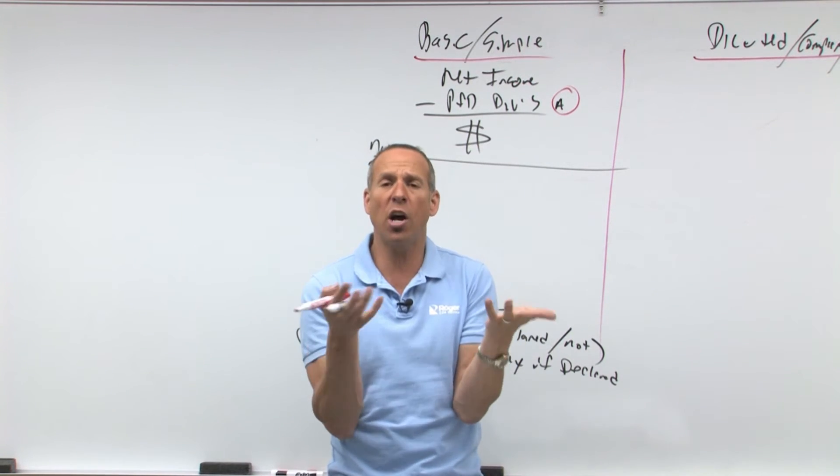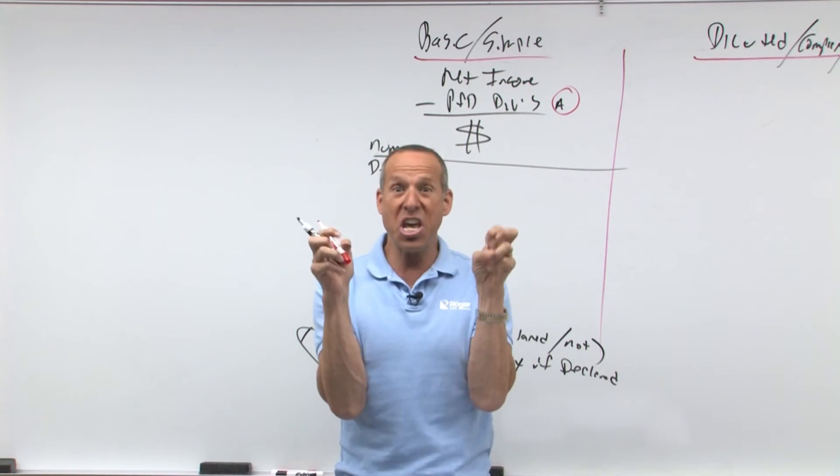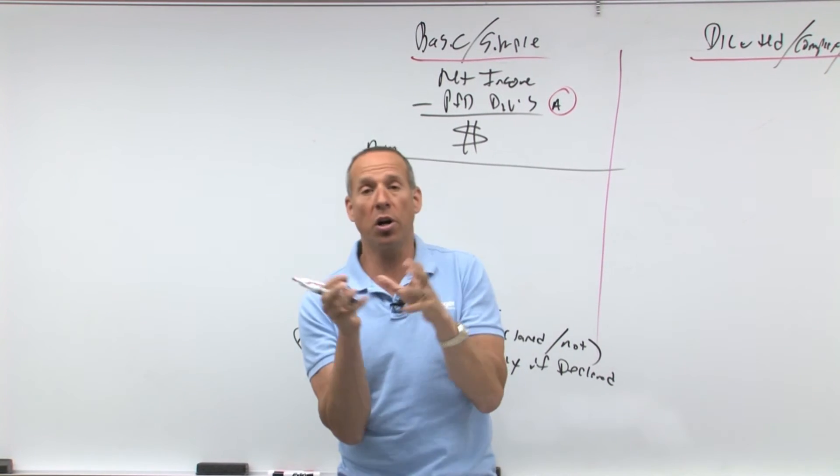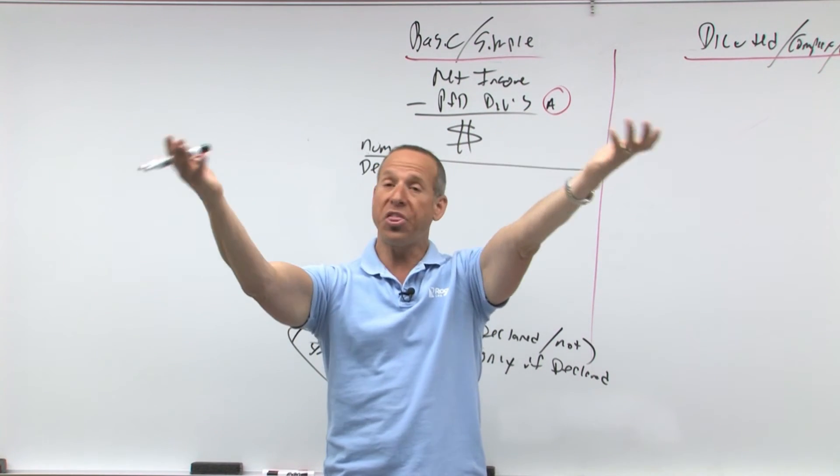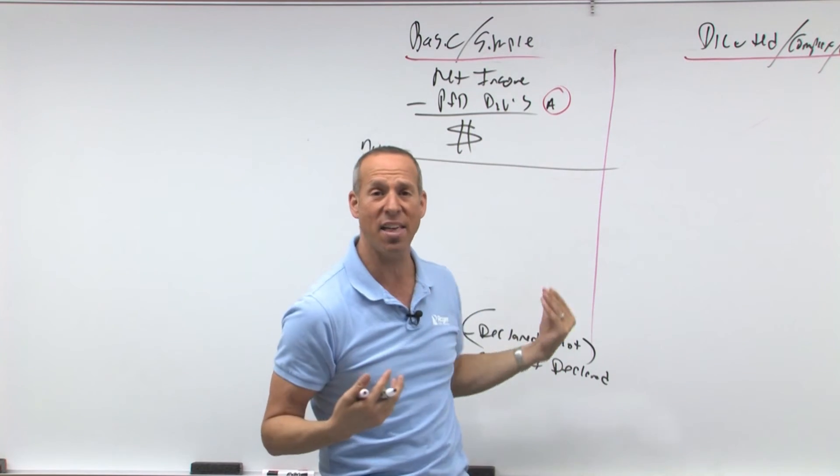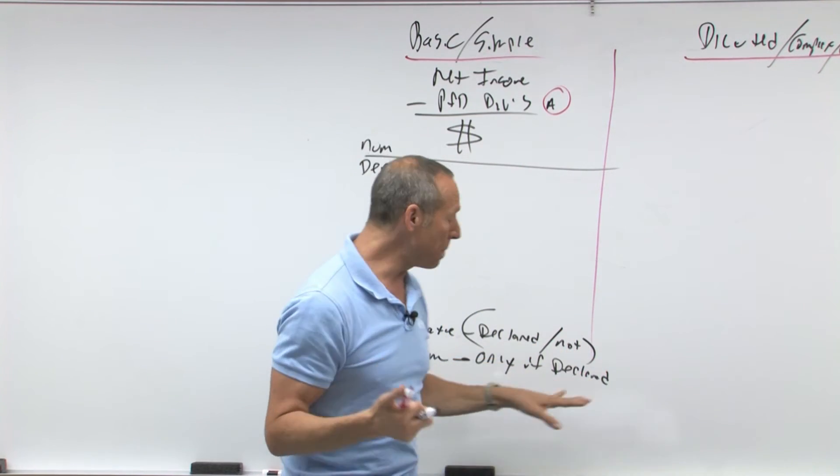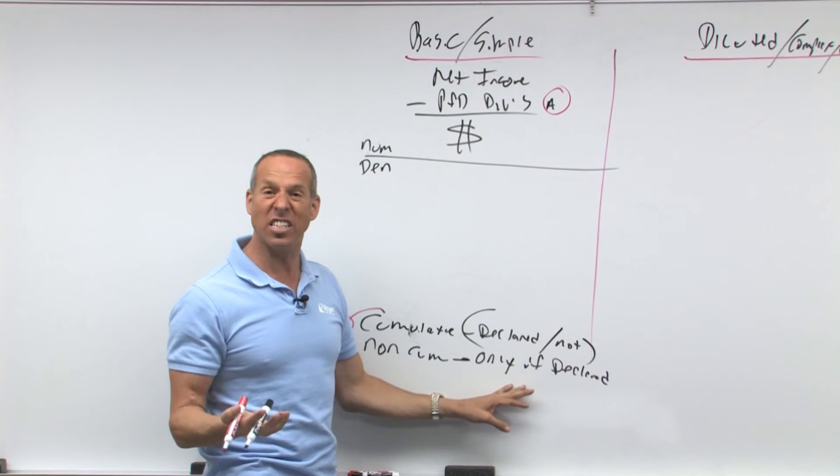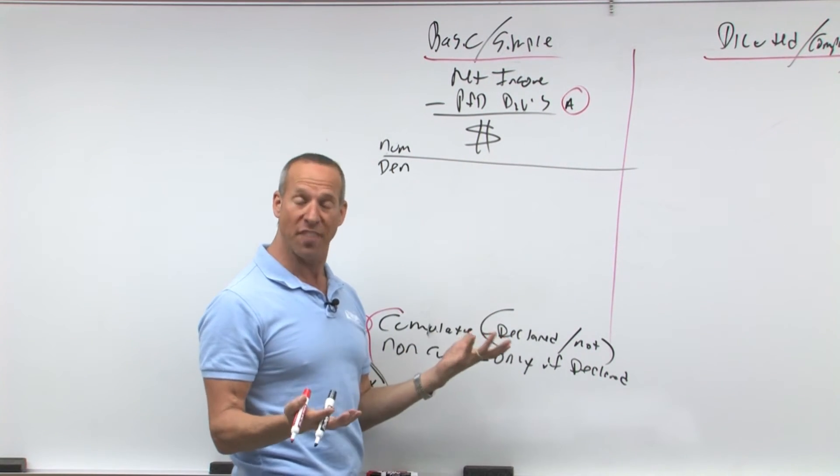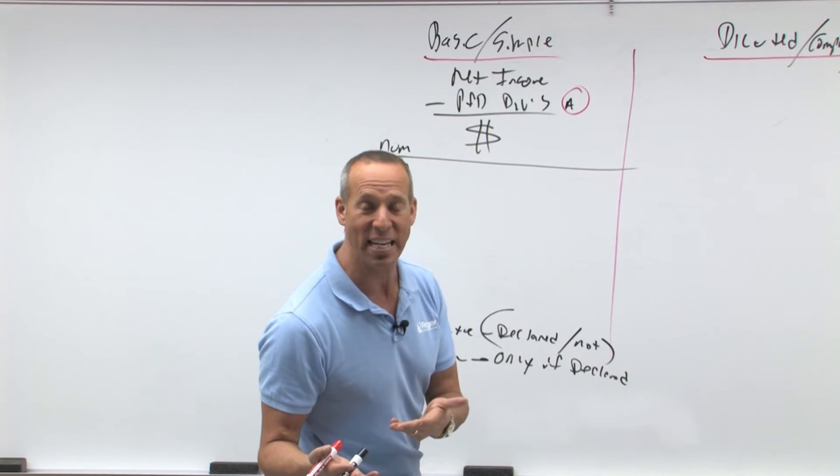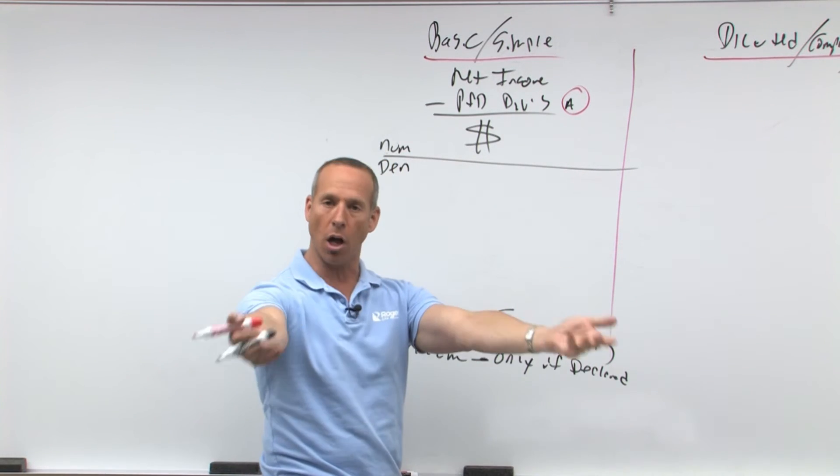Because again, what is earnings per share? It's a theoretical number. Theoretically speaking, if we were to give away all our money to the common shareholders, how much would they get? Well theoretically speaking, we would have had to pay this cumulative whether declared or not. Now if it's non-cumulative, if it's declared, you're going to owe that anyway, so you take it out.